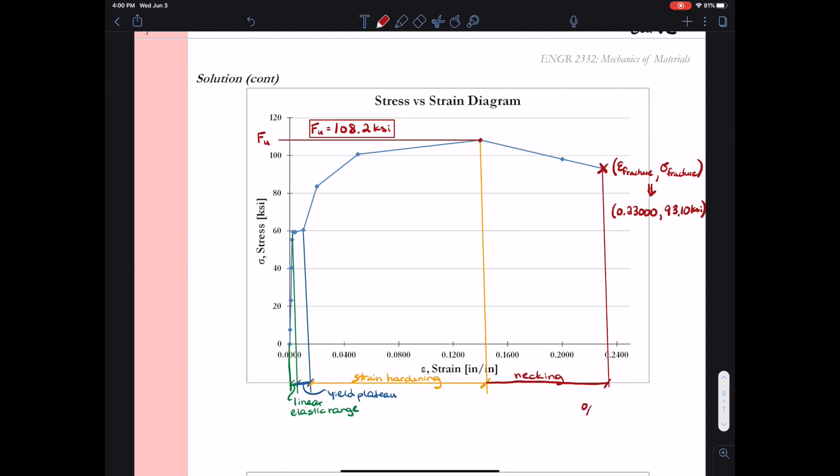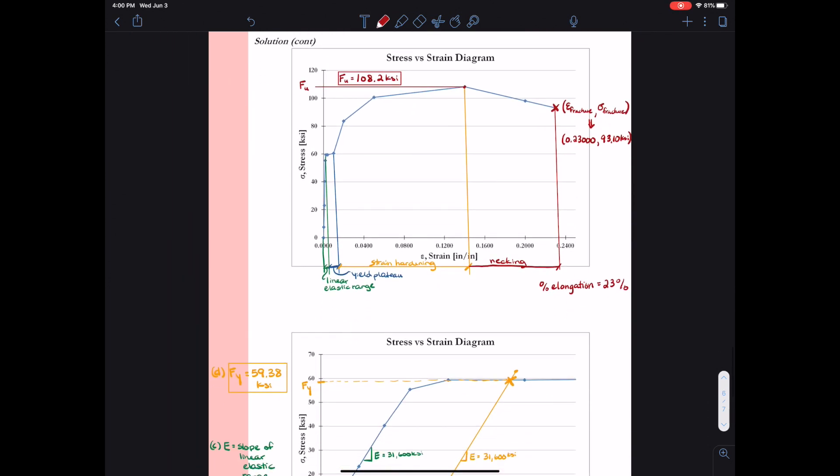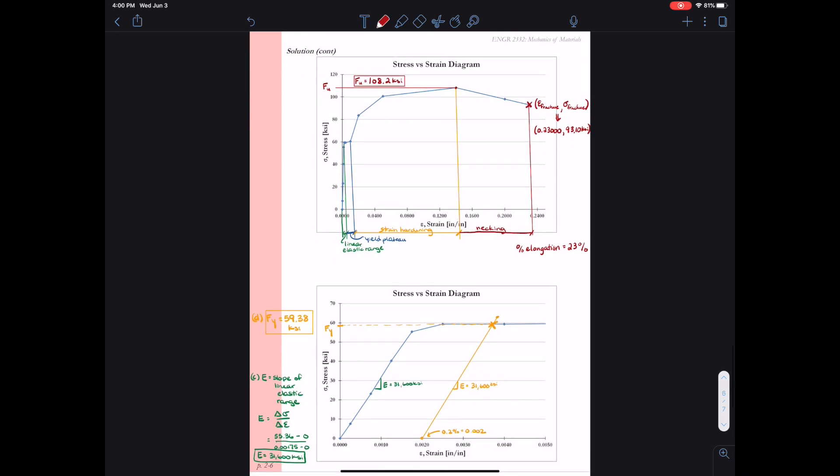The question doesn't ask us to, but we can think about the percent elongation. So this one, if we look at the strain at fracture, the percent elongation is about 23%. So a little bit less than we saw with Stelio, but pretty typical for a high strength steel. We see that this is a high strength steel because it got up to an ultimate stress of 108.2 KSI.